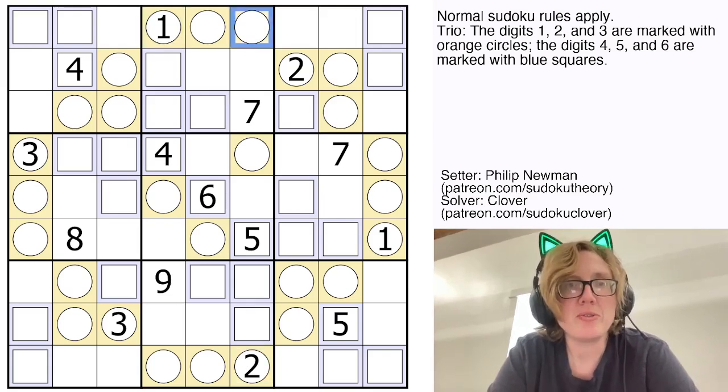So here I've got 1 and 2 seeing that cell, so that's a 3. And 1 and 2 seeing that cell, so that's a 3. And then that will be a 2 and a 1.